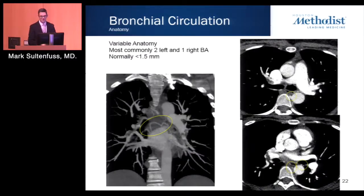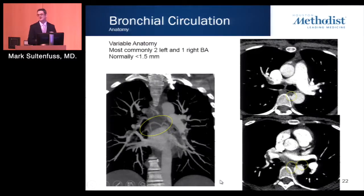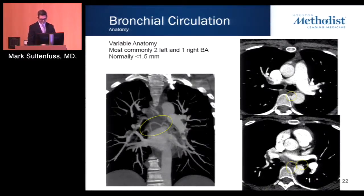An important consideration is the bronchial artery system. Bronchial arteries are commonly present in CTEPH patients and can help with prognostic purposes. There is no correlation between bronchial artery size and preoperative pulmonary artery pressures; however, patients with dilated bronchial arteries have lower postoperative PVR and lower mortality. Dilated bronchial arteries are theorized to be a sign of more proximal disease.